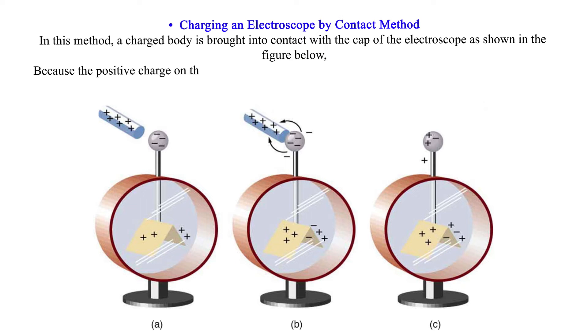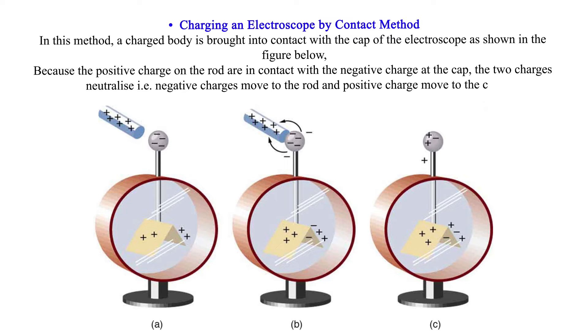Because the positive charge on the rod is in contact with the negative charge at the cap, the two charges neutralize. That is, negative charges move to the rod and positive charges move to the cap. It will be observed that at the leaf, the leaf diverges because of like charges at the point - positive charges.